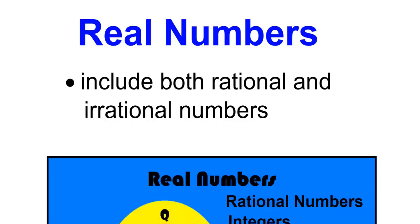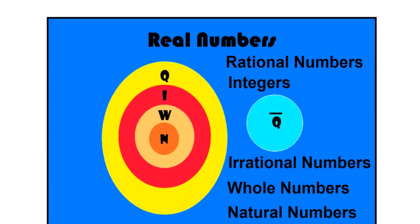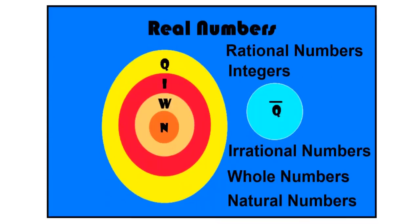Real numbers include both rational and irrational numbers. This graphic organizer on real numbers will help to make sense of how they all relate to one another.